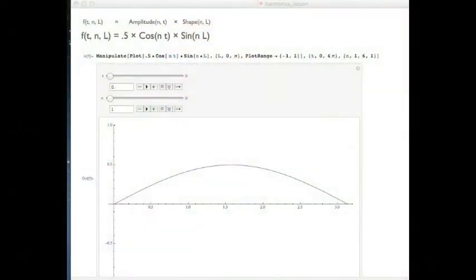All righty. So I decided to make a little mathematical model of a vibrating guitar string in order to talk about what's going on when you play harmonics. Because I think this is a lot easier to look at. So basically the function is an amplitude function, which is a function of the number of nodes as well as the time, multiplied by a shape function, which is also described by the number of nodes as well as the length of the string.